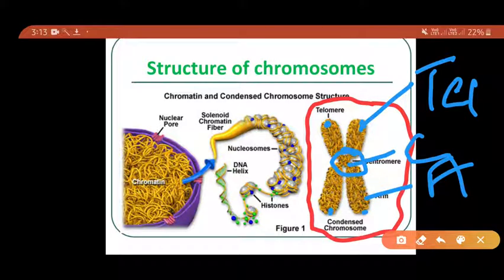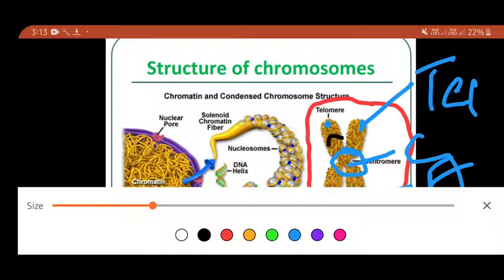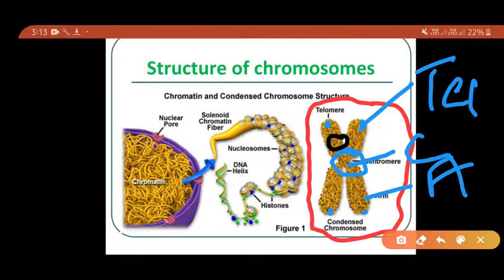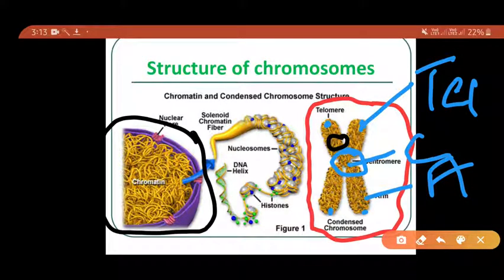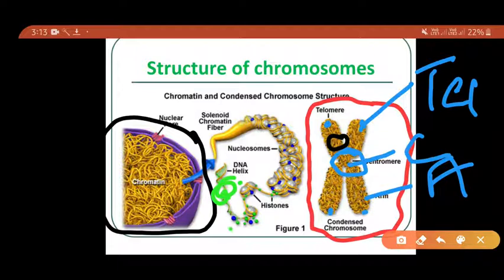This small section of the chromosome is shown in condensed form. As mentioned, the chromosome is made of DNA, RNA, and protein. The helical structure present in this diagram is known as the DNA. The blue and green regions are known as histone proteins.